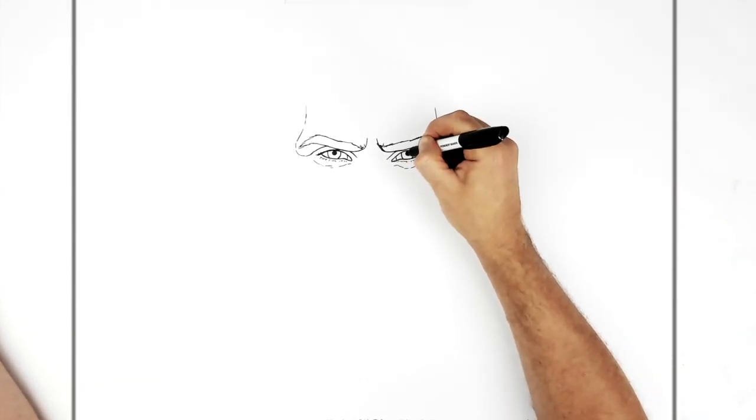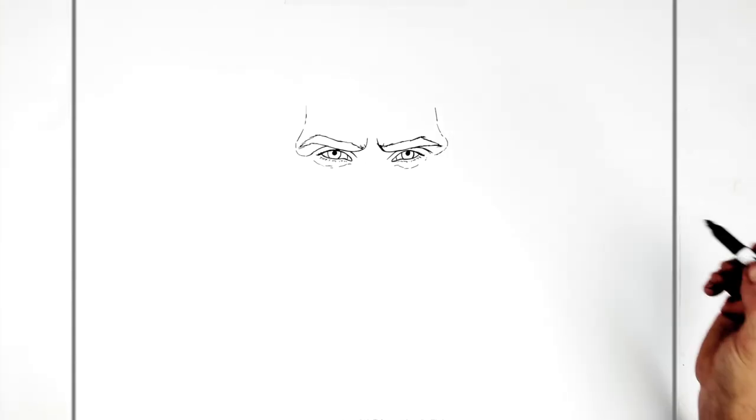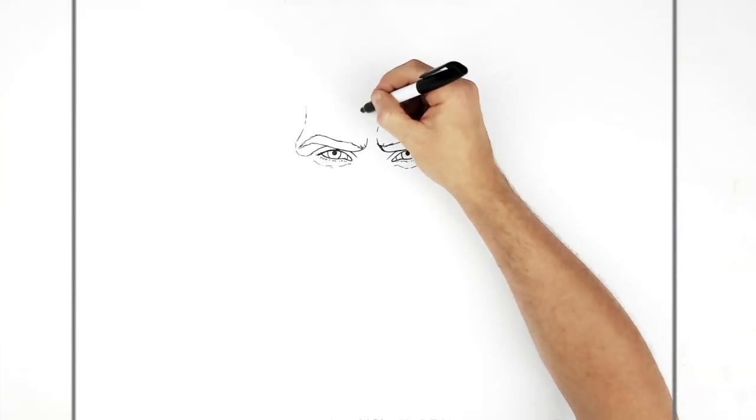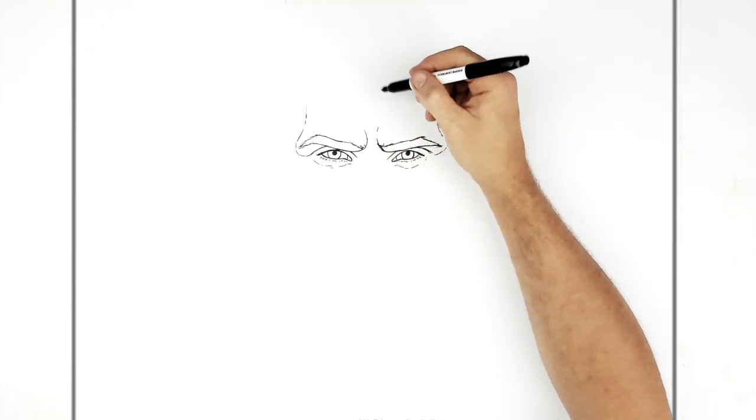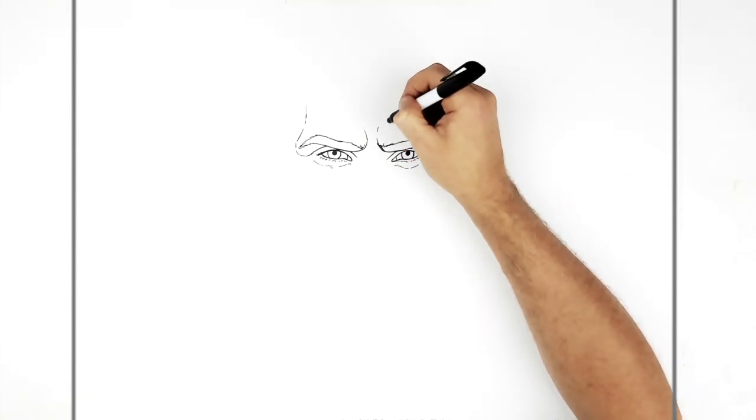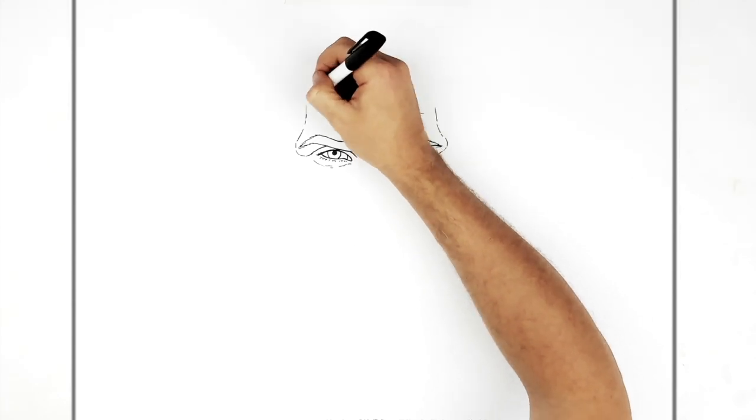Try and make his pupils roughly the same size because they look kind of insane otherwise. So, frowning, frown lines coming across here as well, like his forehead.